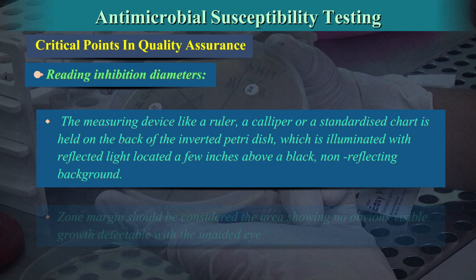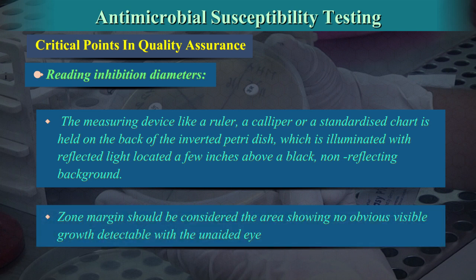The measuring device, such as a ruler, a caliper, or a standardized chart, is held on the back of the inverted Petri dish, which is illuminated with reflected light located a few inches above a black non-reflecting background. Zone margin should be considered the area showing no obvious visible growth detectable with the unaided eye.